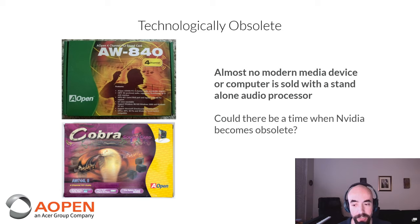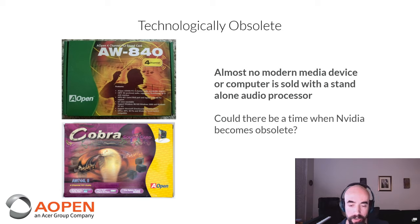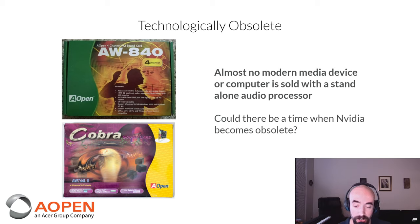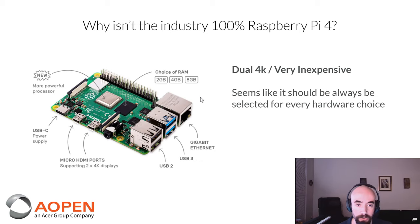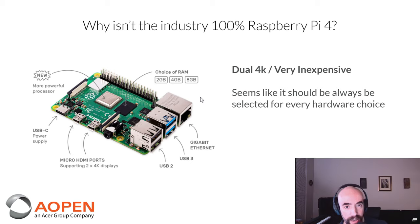That could technically happen, but we're not very close. Nvidia is fighting it from the other side — if we go to a future where the majority of computing is graphics processing, maybe you don't need a traditional CPU architecture, which Nvidia is also working on.